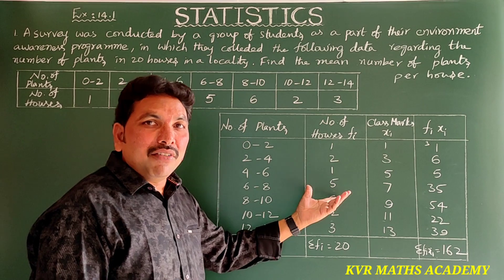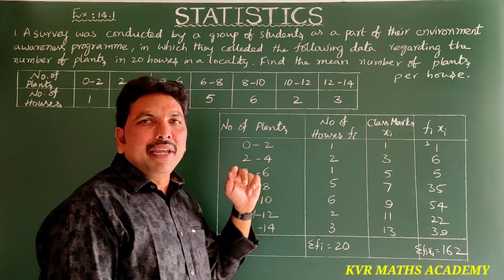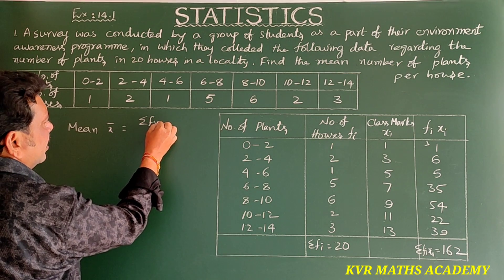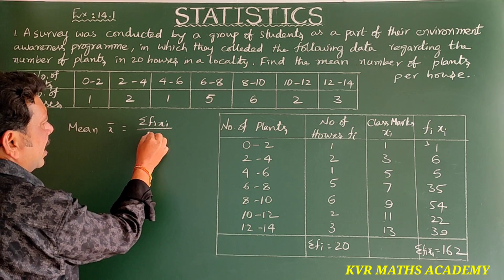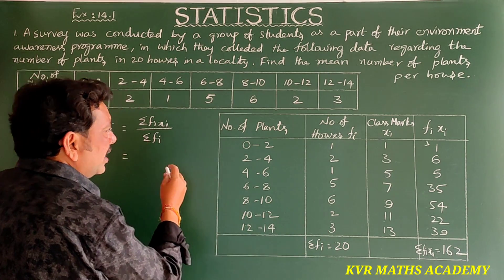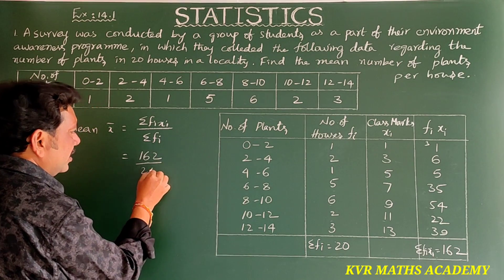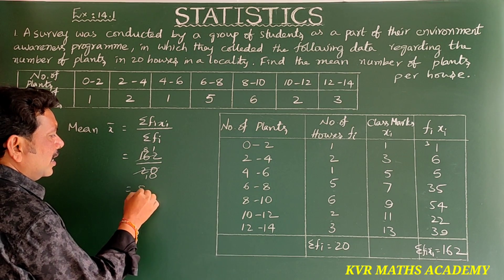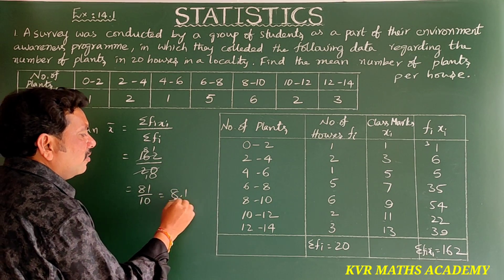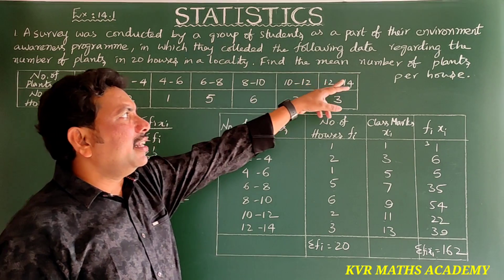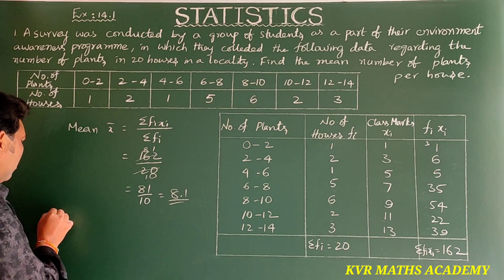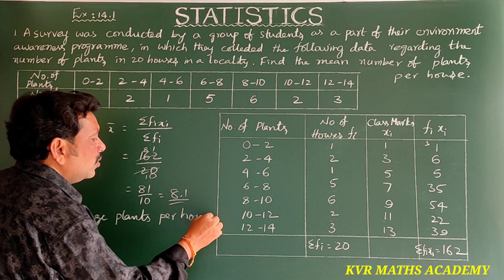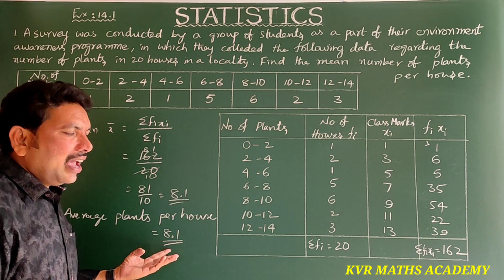Applying the direct method formula: mean x̄ = sigma fi·xi / sigma fi = 162 / 20 = 8.1. Therefore, the average number of plants per house is 8.1.